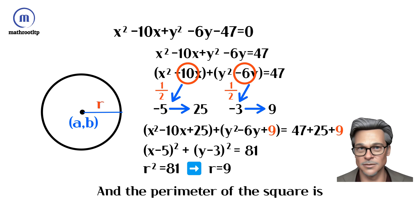And the perimeter of the square is 8 times the radius of the circle. Therefore, the perimeter of the square is 72.